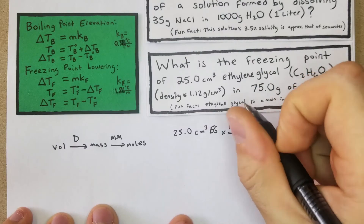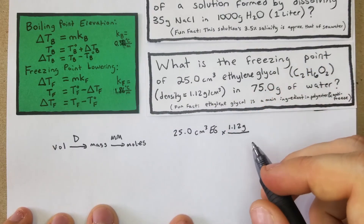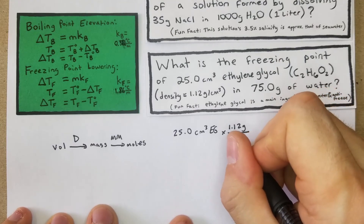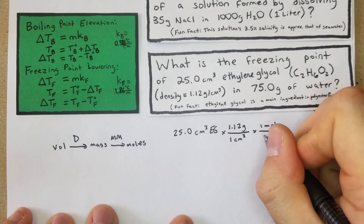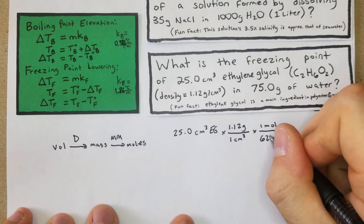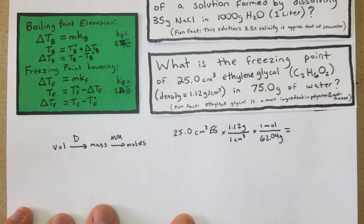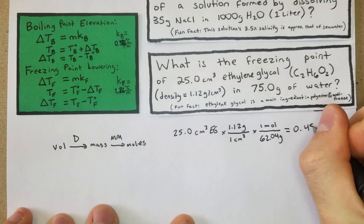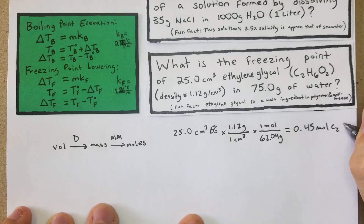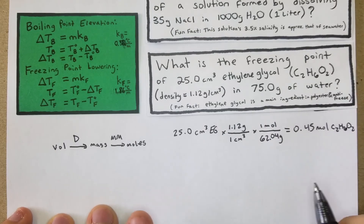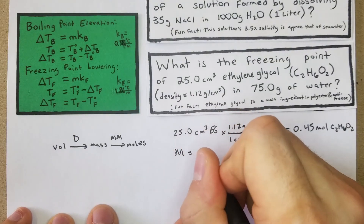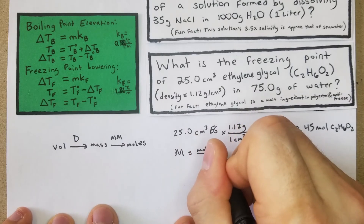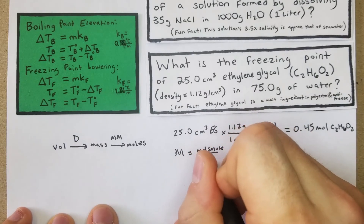The density is 1.12 g/cm³, so we use: 25.0 cm³ × (1.12 g / 1 cm³) × (1 mole / 62.04 g) — the molar mass of ethylene glycol is 62.04 g/mol. From there we get 0.45 moles of ethylene glycol. Now for molality: moles of solute over kg of solvent.